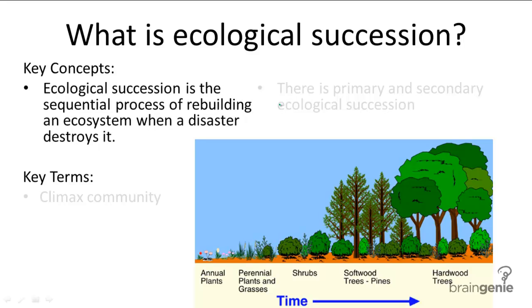There are two types of ecological succession: primary and secondary, the differences of which we are discussing in the next video. But the differences aside, they follow general patterns.